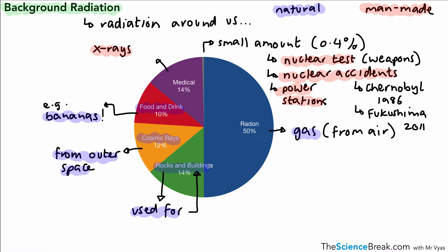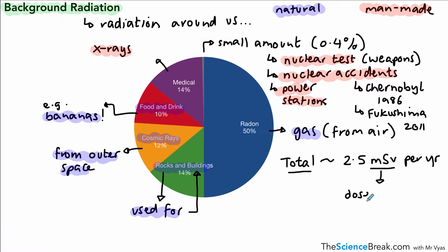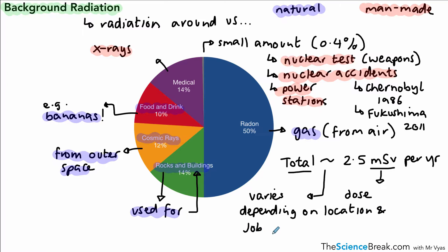If we look at the doses of radiation that most people are exposed to, we can measure it in a unit called millisieverts. The total is approximately 2.5 millisieverts per year per person — a sievert being made up of a thousand millisieverts. That dose will vary from person to person depending on their location — where they might live or work — and also the kind of job they do. For example, working with x-rays or in a nuclear power station would increase the dose.